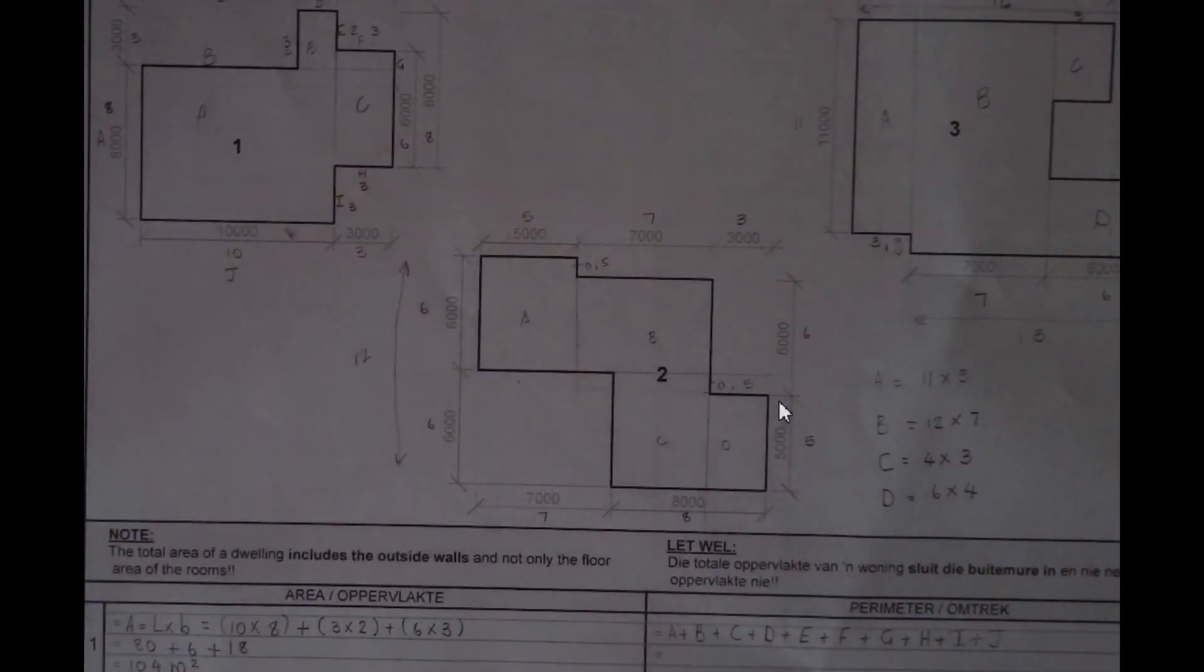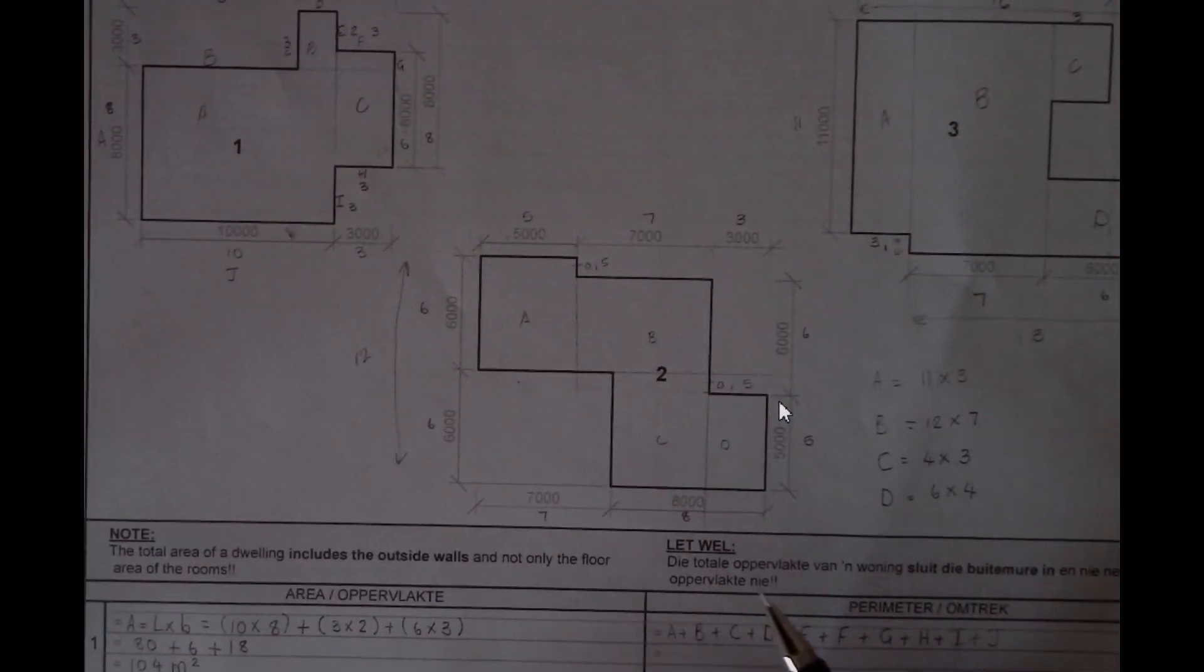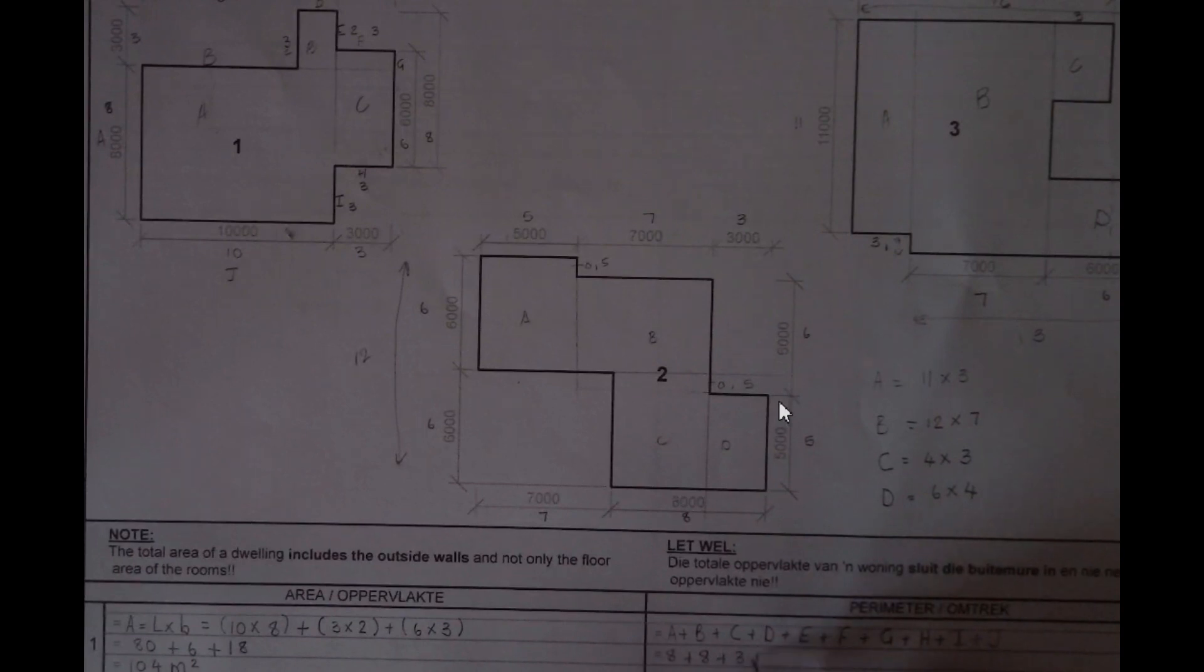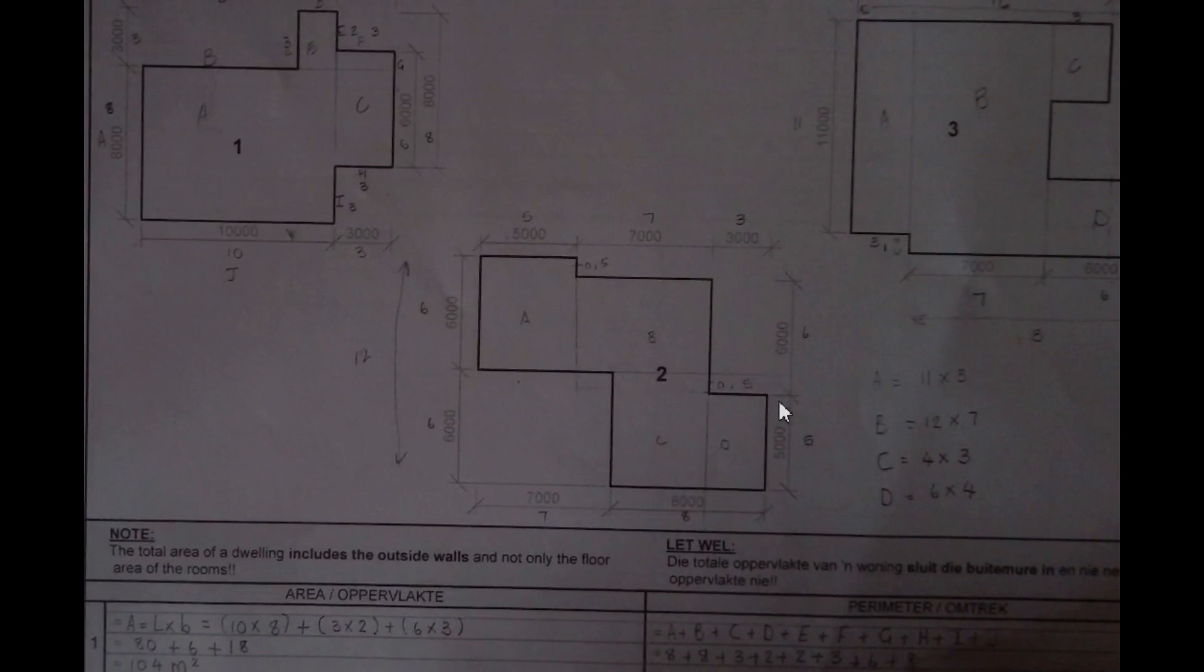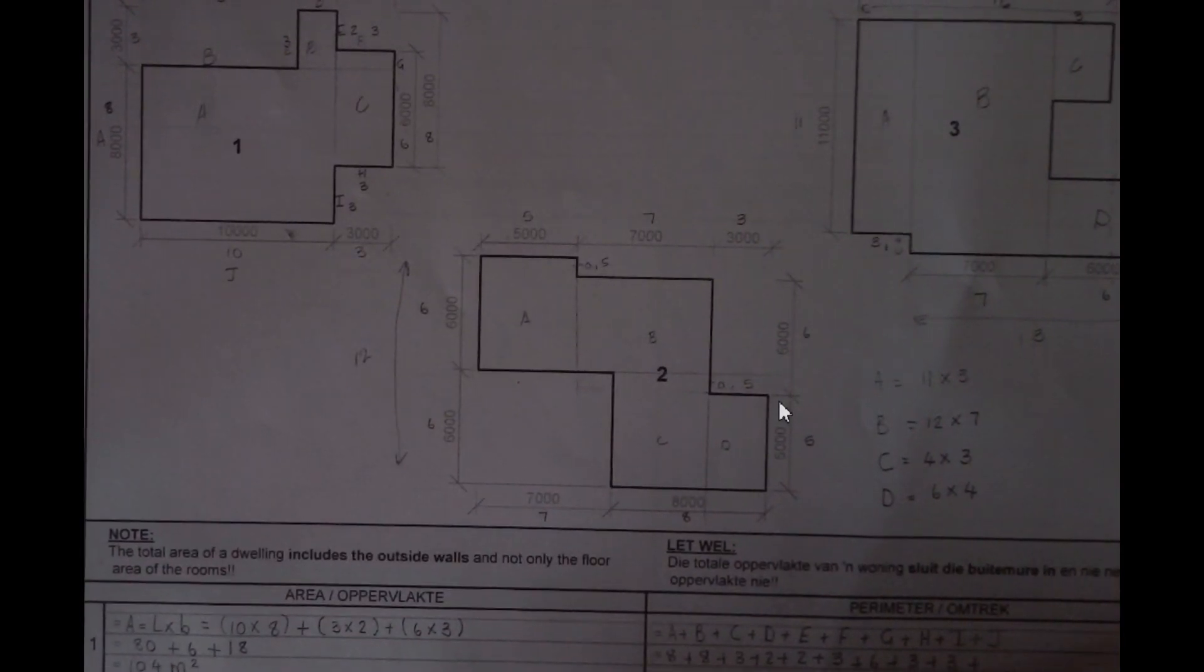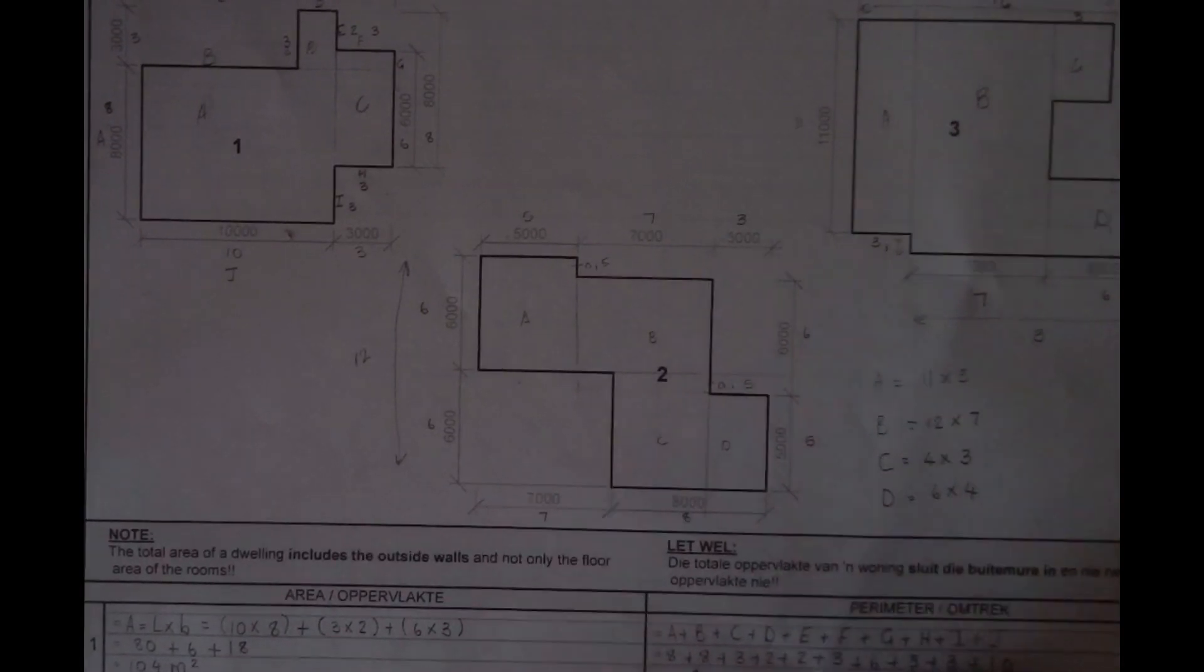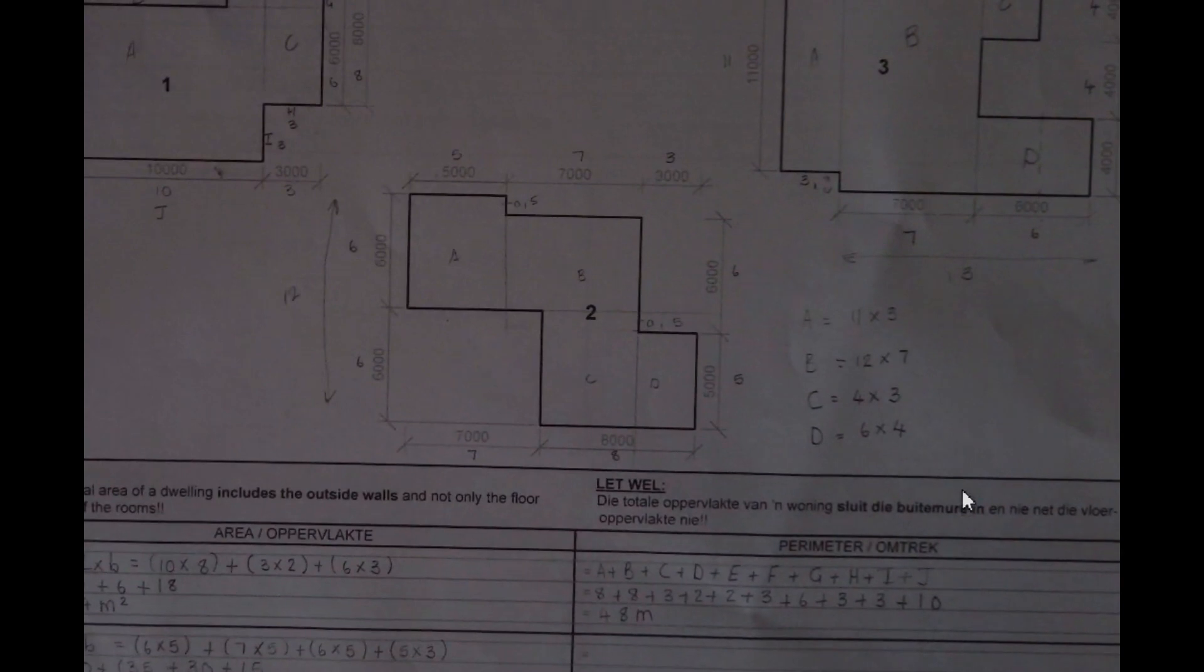Now it's time to add the actual numbers. A was 8 plus 8 plus 3 plus 2 plus 2 plus 3 plus 6 plus 3 plus 3 plus 10. So the total would then be 48 meters. Remember it's perimeter, so there is no need for meters squared. You just add the sides and put everything in meters.